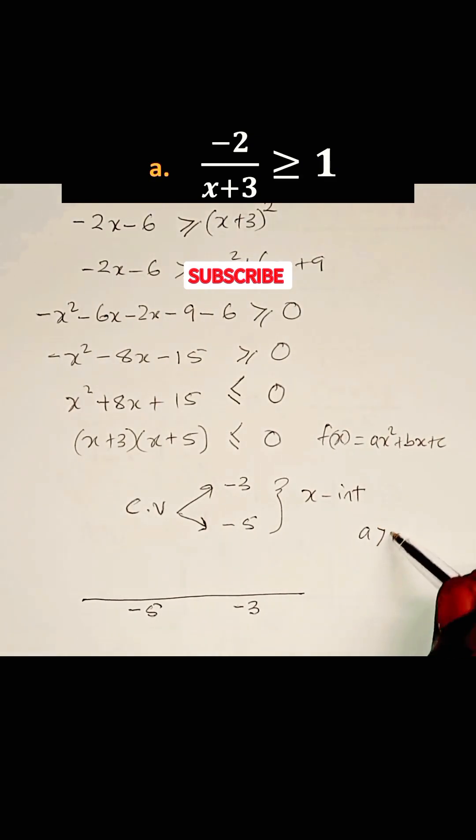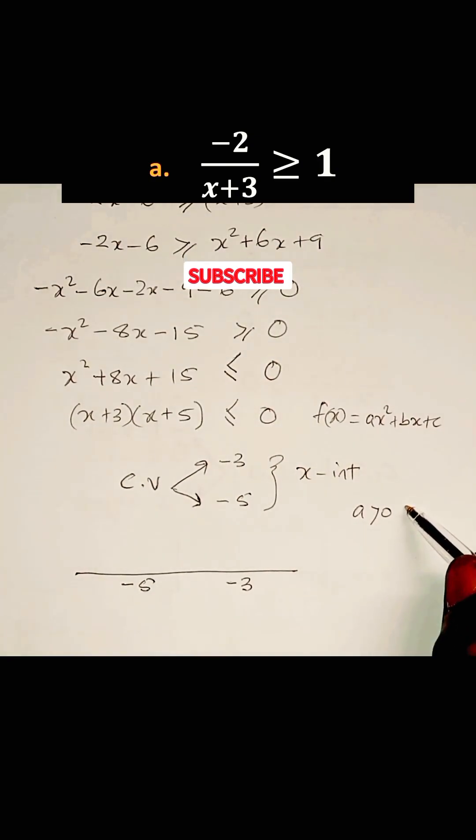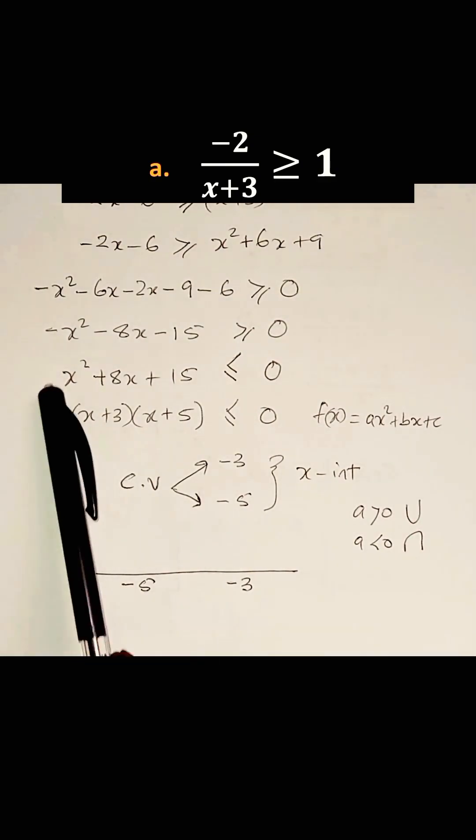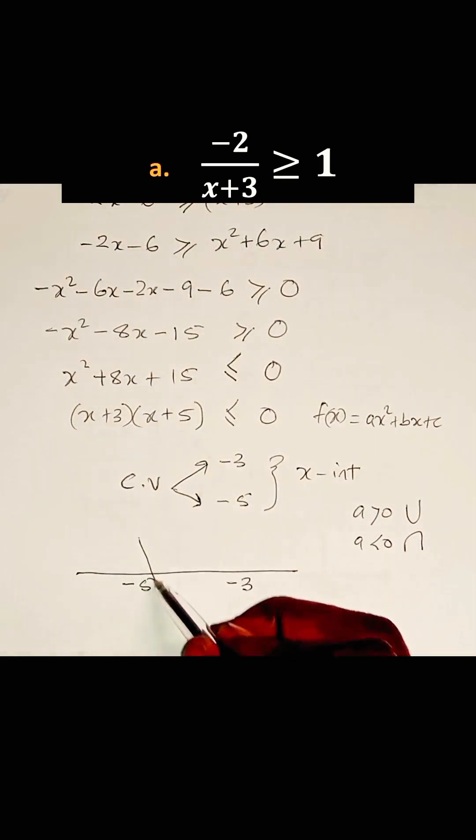And if a is less than 0, the graph is concave down. So in this case, our graph is concave up because a is greater than 0. So we have such a graph.